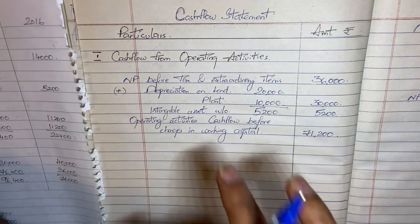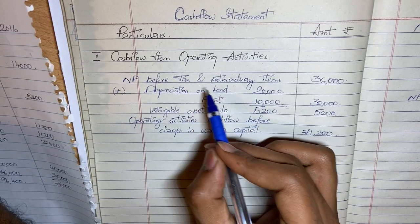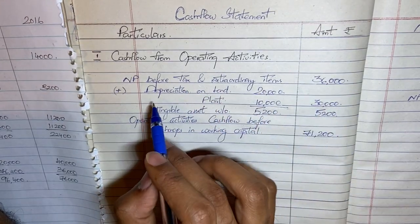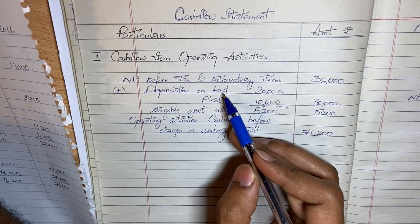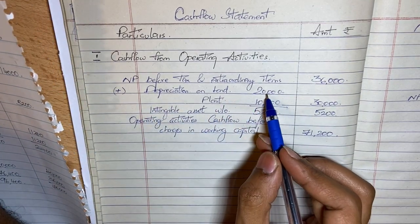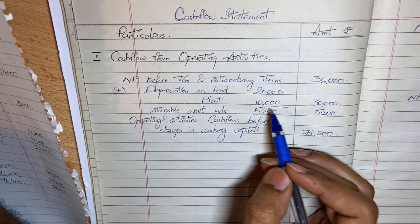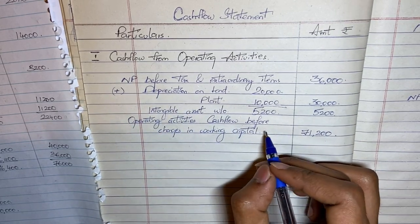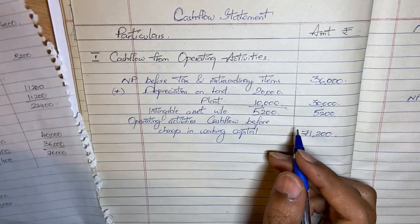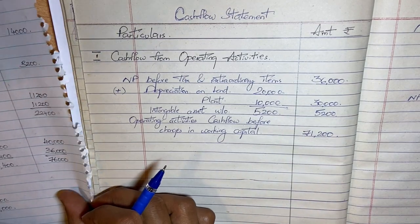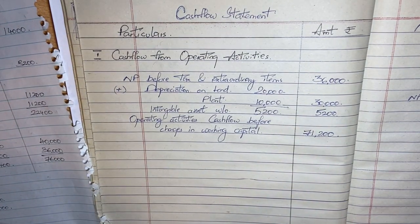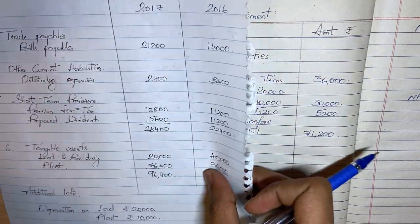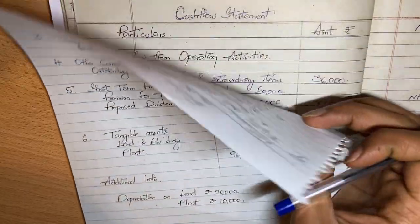So to summarize the first part: we take net profit before tax and extraordinary items, then add back non-cash items such as depreciation and amortization — these are expenses that reduced profit but did not involve actual cash outflow. This gives us operating activities cash flow before changes in working capital. Now we need to consider the working capital changes.